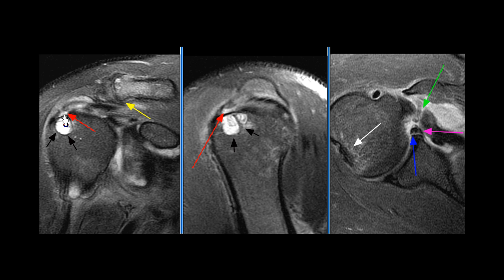The partial tear of the articular surface of the distal supraspinous tendon and the humeral head changes are consistent with a rim-rent tear.